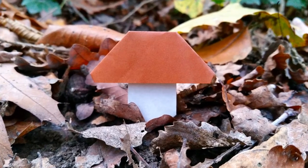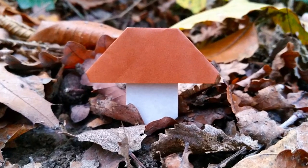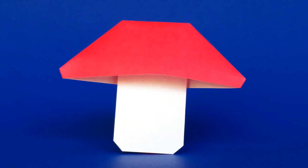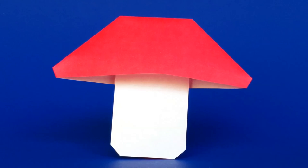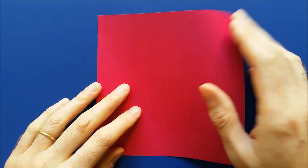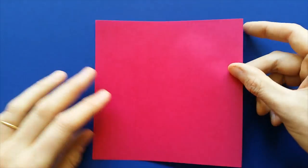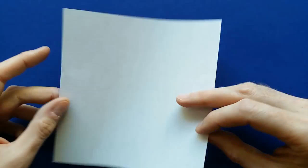Hello! In this video, I will show you how to make my new model, a very simple origami mushroom. This mushroom can lay flat, or you can make it stand up. To make the origami mushroom, you need a square piece of paper with a different color on each side, and we'll start with the color on the bottom.